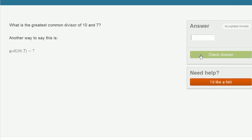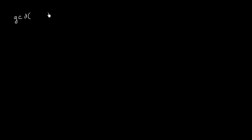Let's do a couple more of these. We're asked: what is the greatest common divisor of 10 and 7? So our GCD of 10 and 7 — there are two ways you can approach this. One way, you can literally list all of the factors — not prime factors, just regular factors of each of these numbers — and figure out which one is greatest.